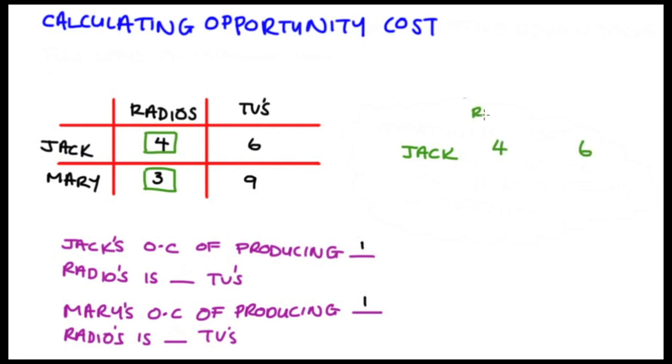My method for getting past this is just to rewrite our table, since it was so easy to read opportunity costs off the table before. So for Jack, we know that he at most can make four radios or six TVs. Now as I said before, we want our opportunity cost in terms of one radio. So how do I get four into one? Well, I divide by four.